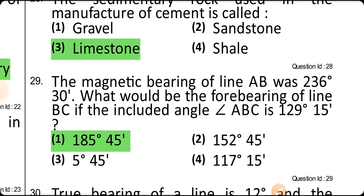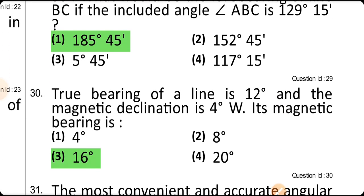The magnetic bearing of AB was 36°30'. What would be the fore bearing of line BC if the included angle is 129°15'? The answer is marked. For the next survey question: the true bearing of a line is 12° and the magnetic declination is 4°, so the magnetic bearing will be 16° — that is 12 plus 4.